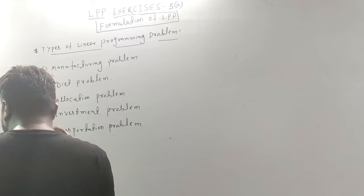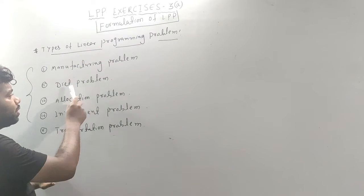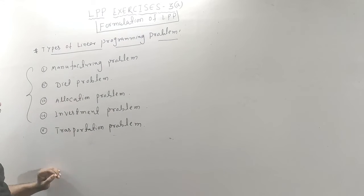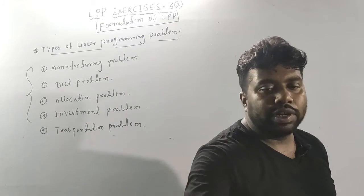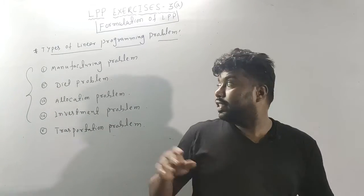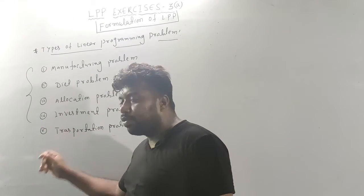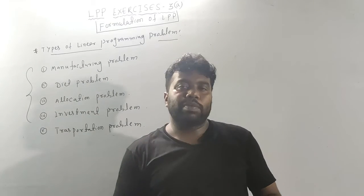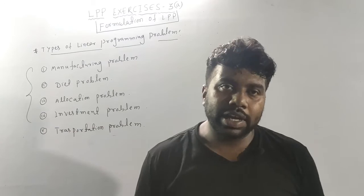Next, the types of Linear Programming Problems. There are five types: manufacturing problems, diet problems, allocation problems, investment problems, and transportation problems. Each type will be covered in a dedicated video so each type will be clear.